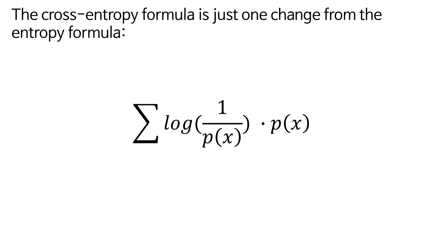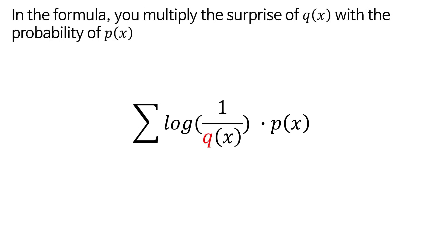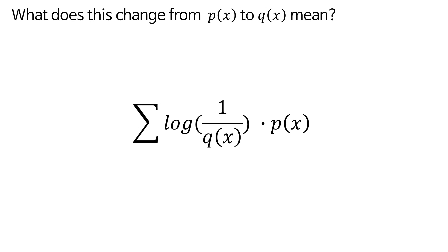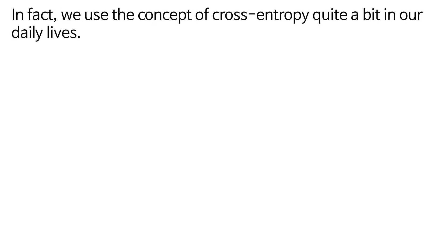The cross-entropy formula is just one change from the entropy formula. In the formula, you multiply the surprise of Q(x) with the probability of P(x). What does this change from P(x) to Q(x) mean?